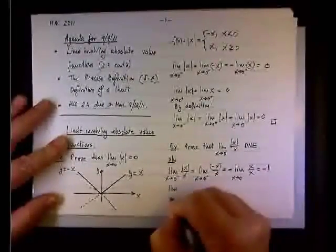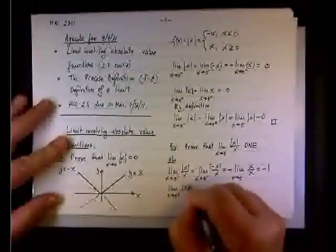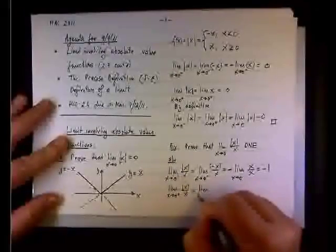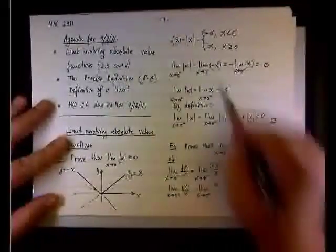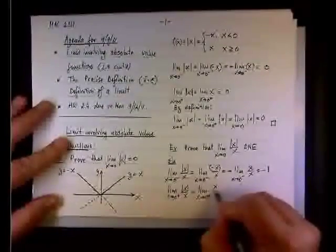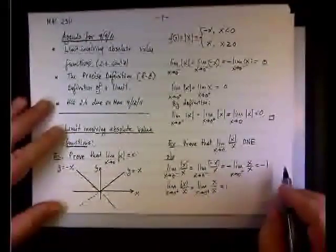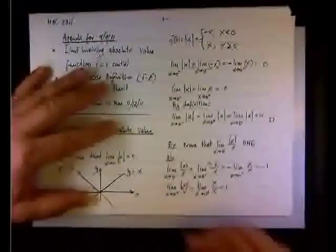We approach from the right side; it's straightforward. The absolute value of x is simply x, and it's positive 1.